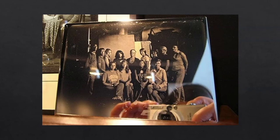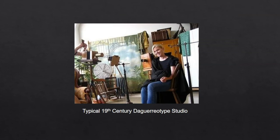This is a modern daguerreotype of my graduating class, and I wanted to add this into the presentation because you can really see the reflection of my hand holding my little point-and-shoot camera. You can see that there's no glass over it, no beautiful velvet and leather case — it's just the plate with the photographic image on it. And this is me being photographed in a modern daguerreotype studio in Toronto. The studios used big windows that would let lots of light in, and you can see the metal headrest that would be used to hold the subject still for the 20-minute-long exposure.